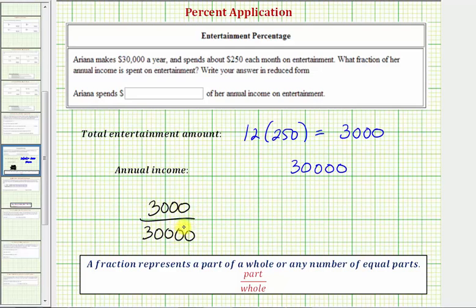Notice how this fraction does simplify. There's a common factor of 3,000, so we divide the numerator and denominator by 3,000 to simplify the fraction. This simplifies to one-tenth.